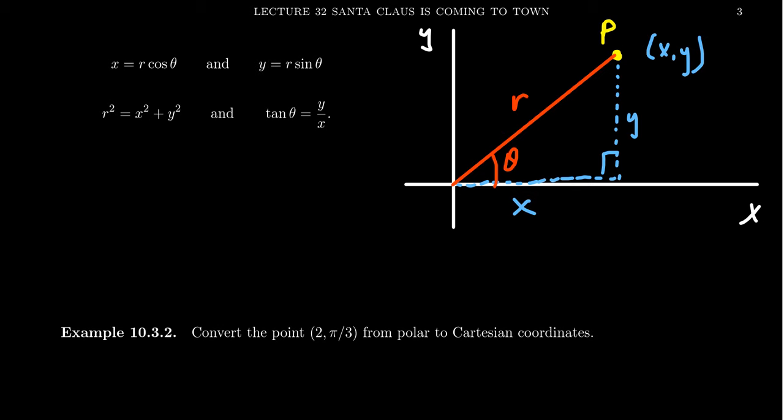You get x over r equals cosine of theta. If you clear the denominators you get x equals r cosine theta—that's the Ka from SOHCAHTOA. If you take y over r, this equals sine theta, opposite over hypotenuse. Clear the denominators and you get y equals r sine theta.